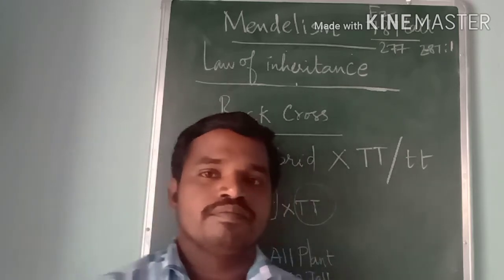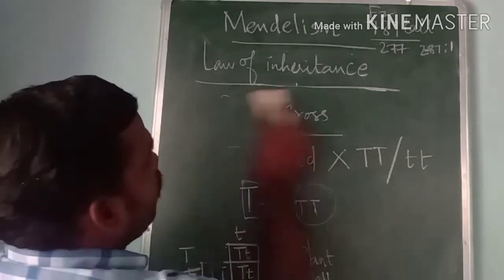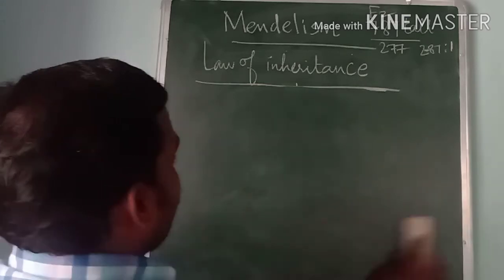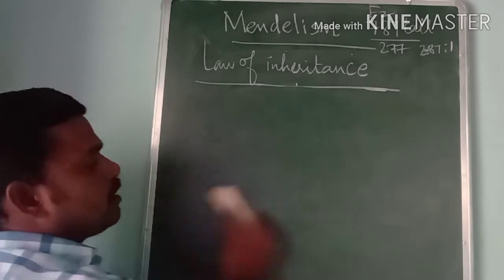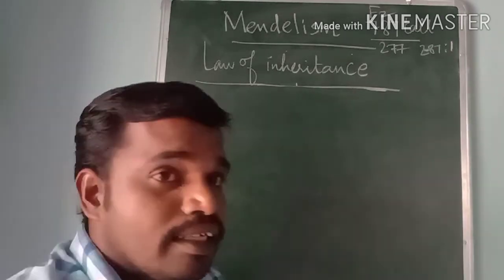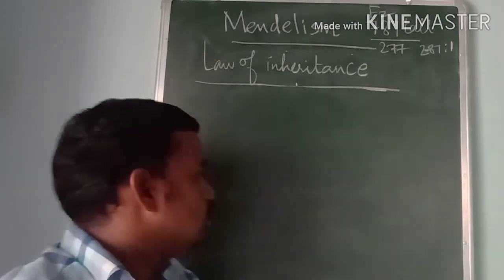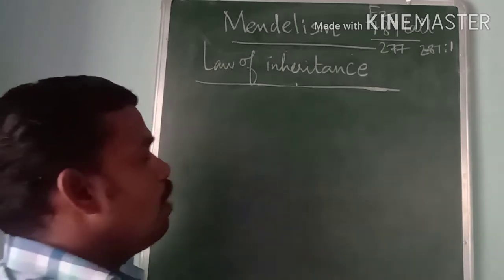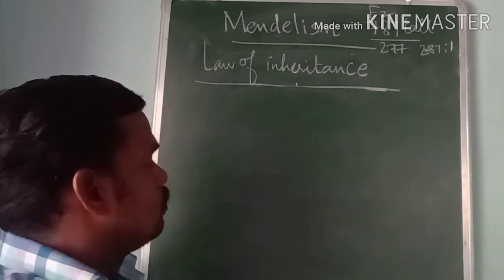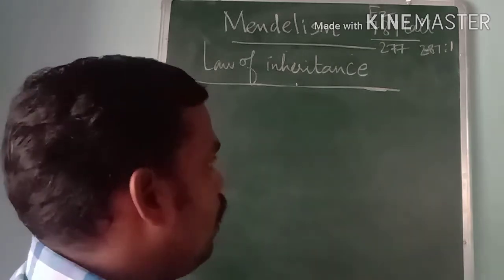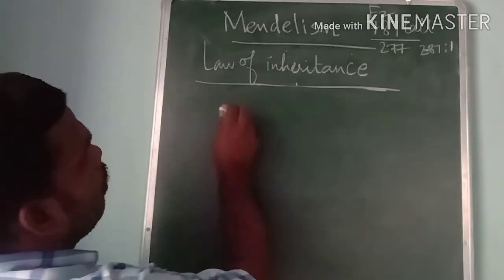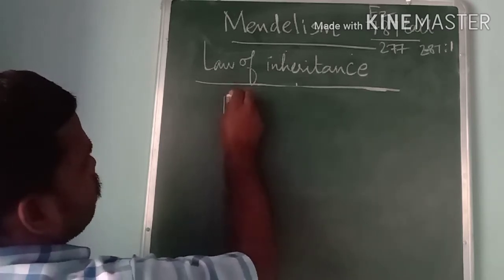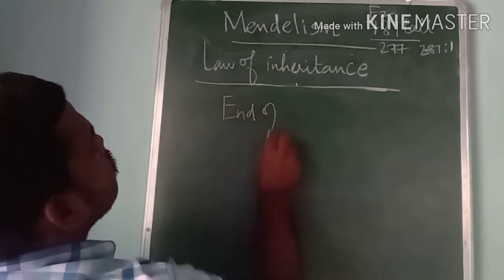So we have seen the monohybrid cross. In order to find out the genotype of an unknown tall plant, we performed the test cross. By doing the test cross, Mendel was able to easily identify whether the tall plants taken were homozygous or heterozygous plants. Let's look at the observations and postulations at the end of the monohybrid cross experiments.